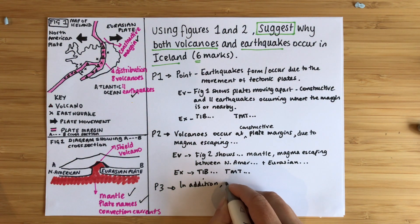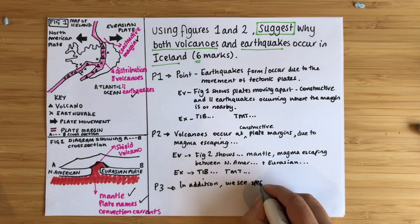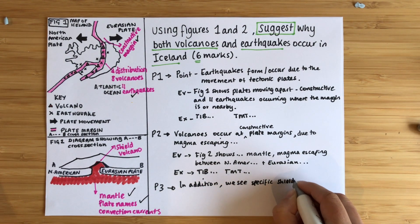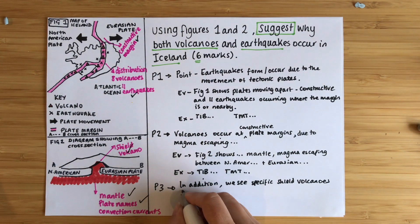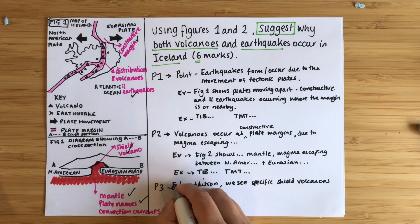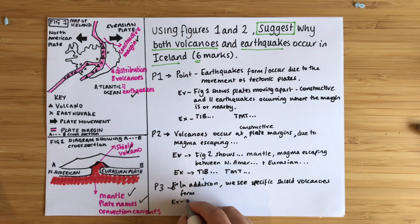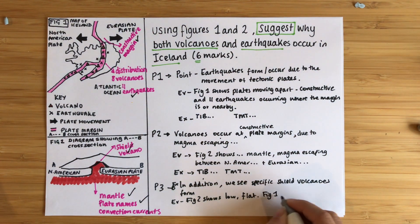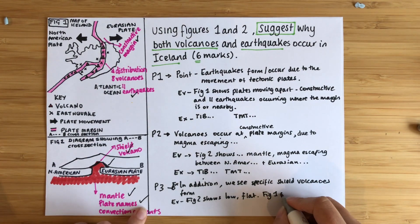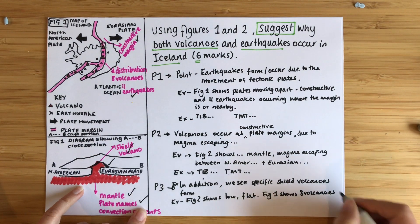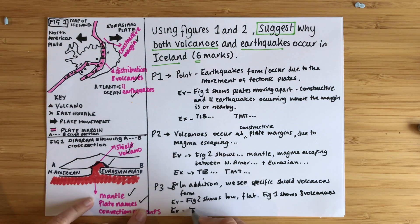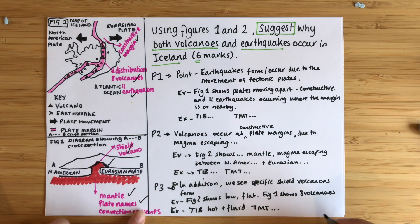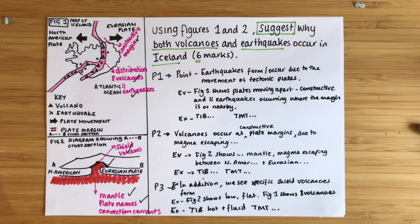Finally, include a third paragraph with that extra bit of knowledge. In this case, we're going to mention shield volcanoes and how they form. Using figure two, it shows a low and flat volcano. We can also feed in figure one, which shows there are eight volcanoes along the plate margin in Iceland. Then explain why: because there is very hot and fluid magma escaping, this means it can flow a long way before it cools, forming a low and flat shield volcano.